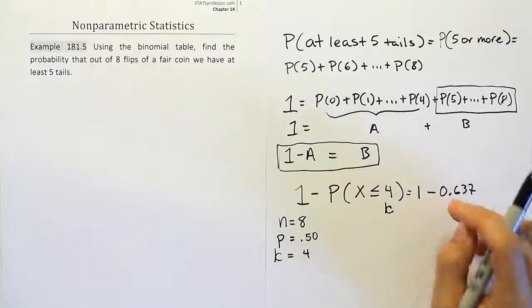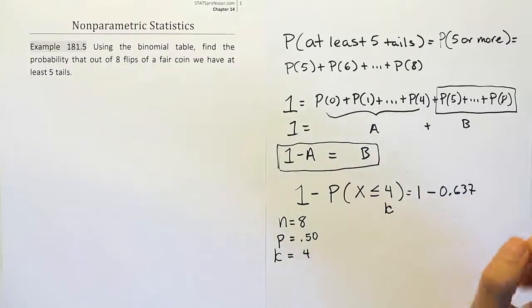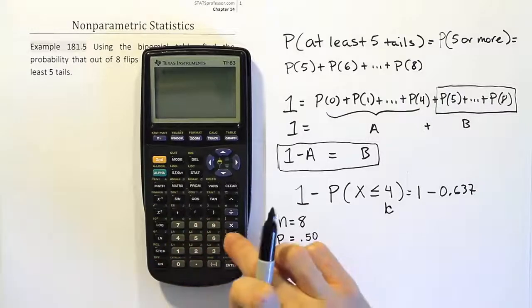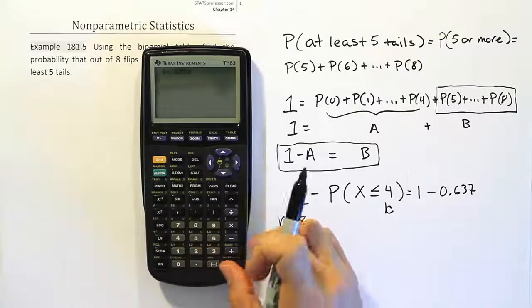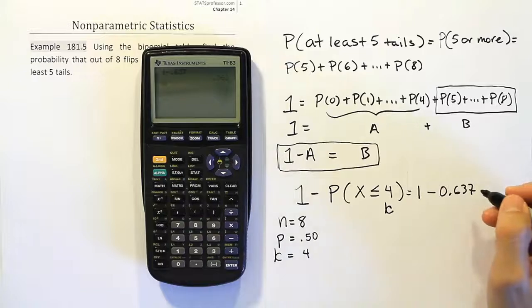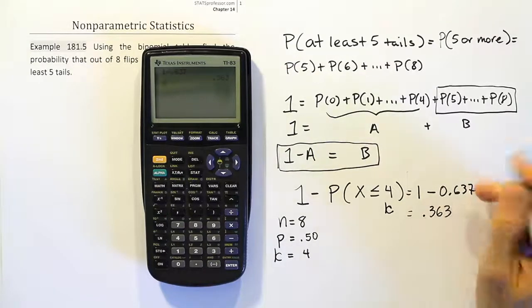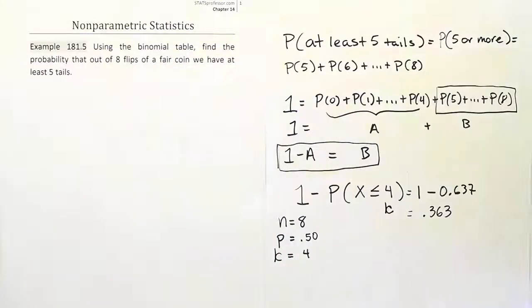That was the number we found in our binomial table when n was 8 and p was 0.5 and our k here was 4. Okay. So based on that, we'll get our final solution to the problem. We're just going to do 1 minus 0.637, and that's our answer. So 1 minus 0.637, and of course you get 0.363. So the answer is 0.363, or 36.3% of the time we'll end up with 5 or more tails.